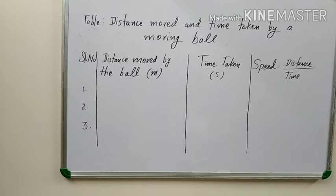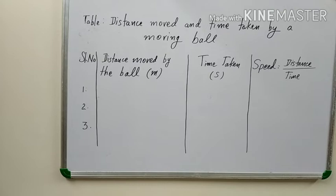Hope all of you do cycling. Children, are you interested to find your cycling speed? For this, you can fix two points such that the distance between those two points is known. This can be done with the help of your parents. After that, you can measure the time taken to cover that distance and calculate your cycling speed.